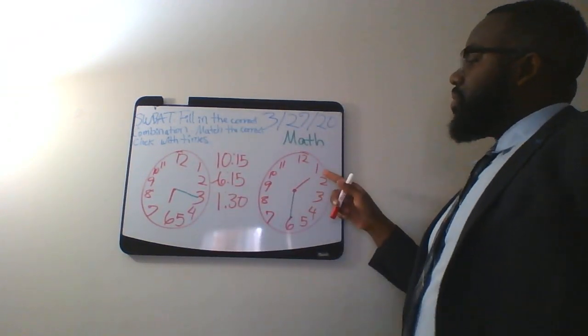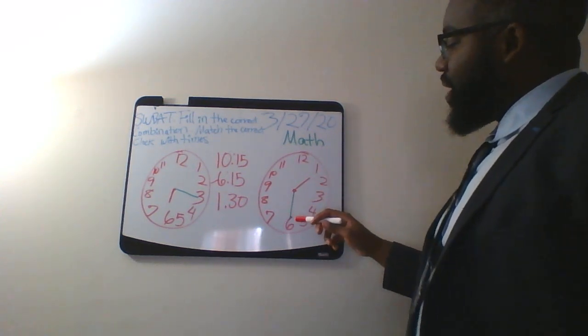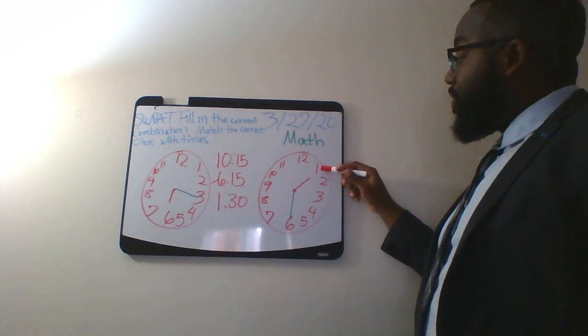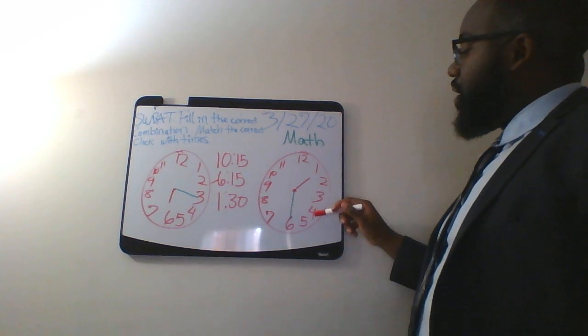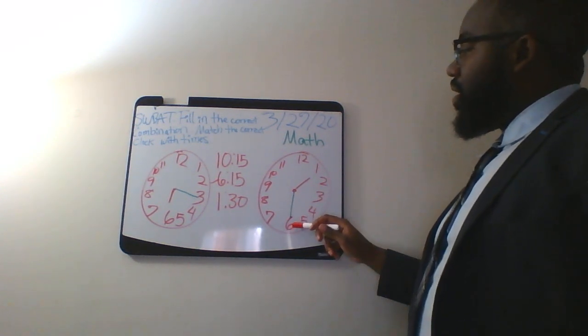Now, this time says 1. The hour hand is pointed at 1, but it's pointed at 6. Let's start at the 1 to figure out what the time is to count by 5s. 5, 10, 15, 20, 25, 30. 1:30.